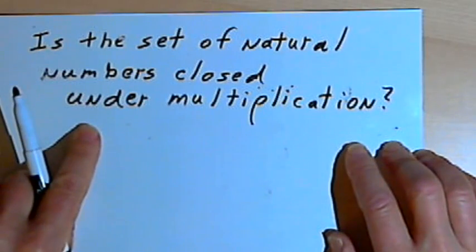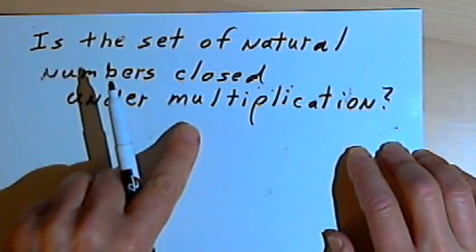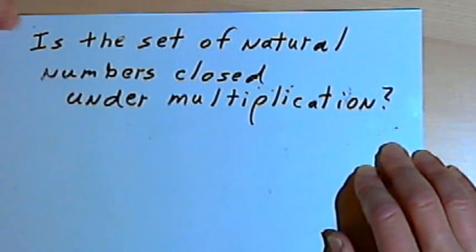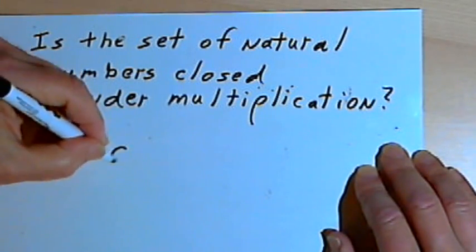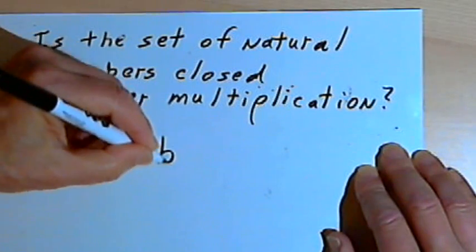I want to think more generally about it. If I think about multiplication, what I could do is I could say, oh wait, multiplication is repeated addition. So if I have the natural numbers A and B,